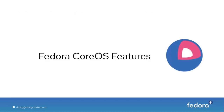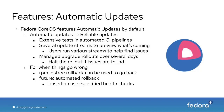Fedora CoreOS features automatic updates by default, and if you have automatic updates, you need them to be reliable. We achieve this by having extensive tests in automated CI pipelines. We also have several update streams that allow users to preview what's coming, so they can know when changes are coming that they need to address or report issues for. We also have managed upgrade rollouts — upgrade windows happen over several days. If people hit issues early in the rollout window, they report them and we can address the issue or stop the rollout if needed.